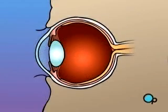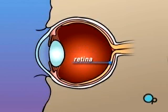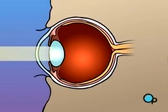The human eye is constructed like a camera, with a clear lens in the front and light-sensitive tissue at the rear. This tissue makes up the retina, which acts like a photographic film. In an eye that has perfect vision, light rays passing through the pupil are focused by the lens to fall precisely at the center of the retina.